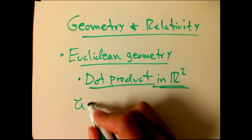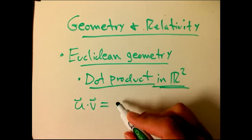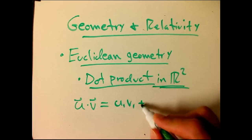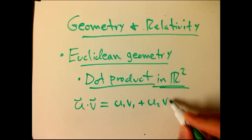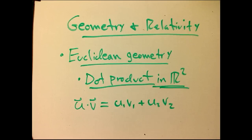So if I have two vectors, the dot product is defined in coordinates like this. If U is U1 comma U2, V is V1 comma V2, there's the dot product. And that's a scalar. It's not a vector, remember?